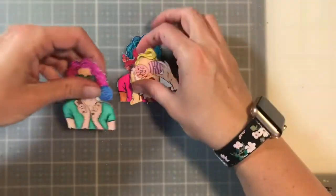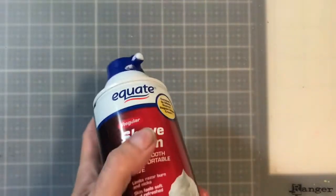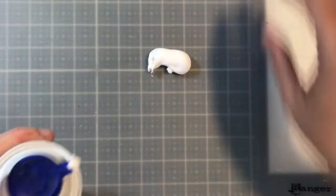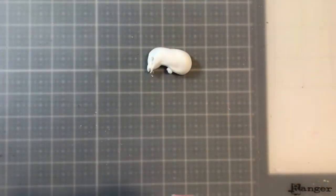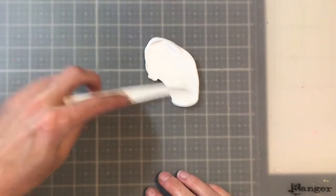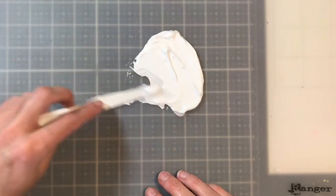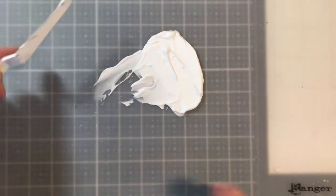So the first technique that I'm going to do is called the drag technique, or I've named the drag technique, because I wanted them all to start with D's. So you're going to take some shaving foam, and you're just going to squirt a little bit out onto your craft mat, and it does not take much.